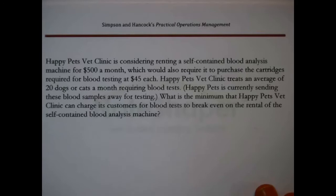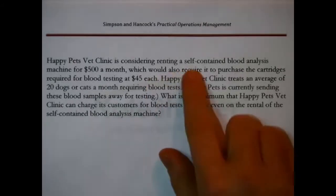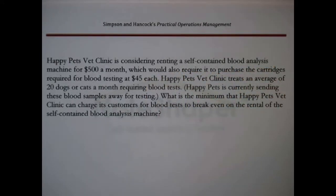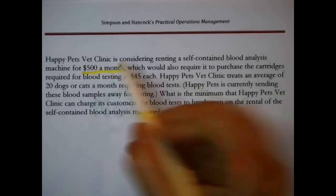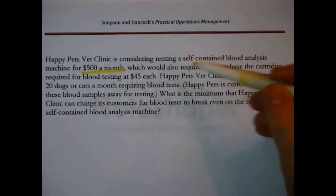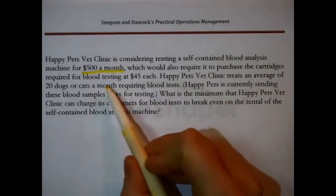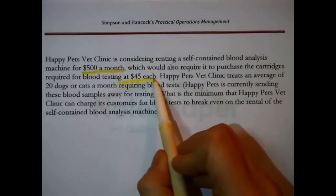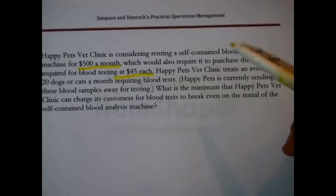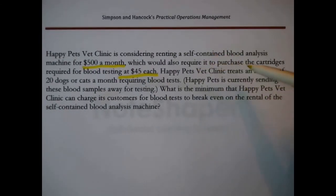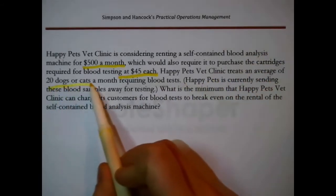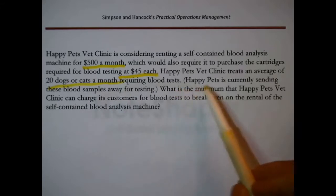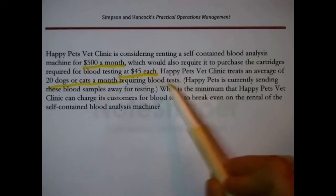Happy Pets Vet Clinic is considering renting a self-contained blood analysis machine for $500 a month. That's interesting. Which would also require it to purchase cartridges required for blood testing at $45 each. Happy Pets Vet Clinic treats an average of 20 dogs or cats a month requiring blood tests. So that right there is a quantity.